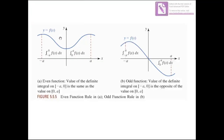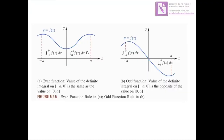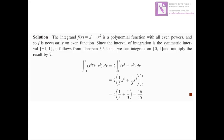We want to evaluate the integral from minus 1 to 1. We know that the rule for an even function says the integral from minus a to a of f equals 2 multiplied by the integral from 0 to a. So the integral of x⁴ plus x² from minus 1 to 1 equals 2 times the integral from 0 to 1 of x⁴ plus x². The antiderivative of x⁴ is x⁵ over 5, and the antiderivative of x² is x³ over 3.